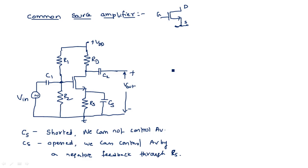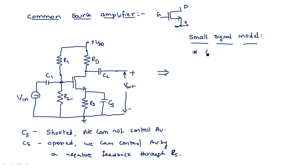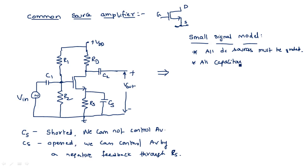Now let's see the small signal equivalent model. For the small signal model, two key rules: first, all DC voltage sources must be grounded; and second, all capacitors should be short-circuited.